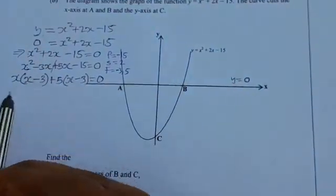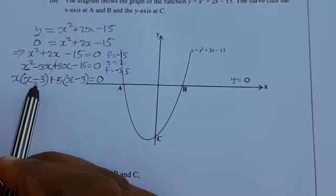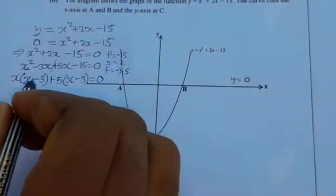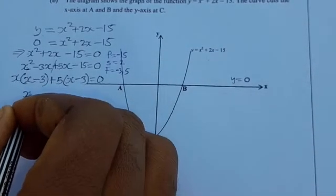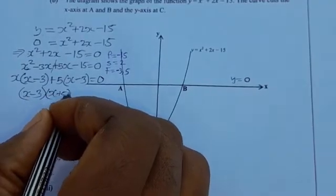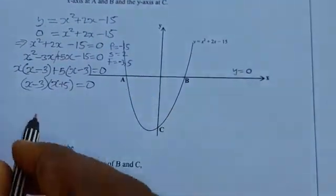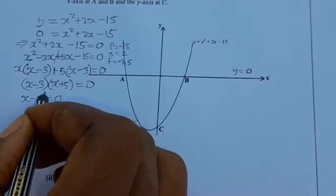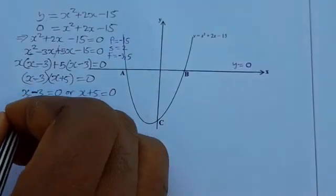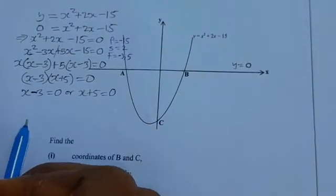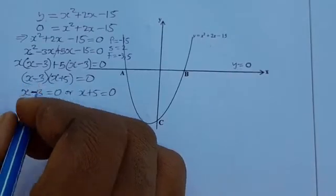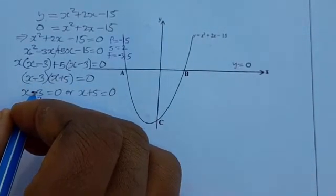You can see that what is in both brackets is the same — (x − 3). If you have different things in the brackets, you've gone wrong somewhere. So we pick one bracket and the outside terms: (x − 3)(x + 5) = 0. It follows that x − 3 = 0 or x + 5 = 0.